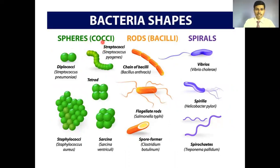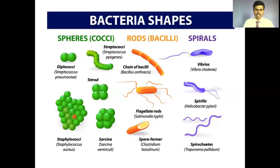The cocci are round-shaped bacteria. Depending on their number, cocci are further sub-classified: if two in number they are called diplococci; if arranged in a chain they are called streptococci; if four in number they are called tetracocci; if eight they are called sarcina; and if there are many cells not forming any definite shape, such bacteria are called staphylococci.